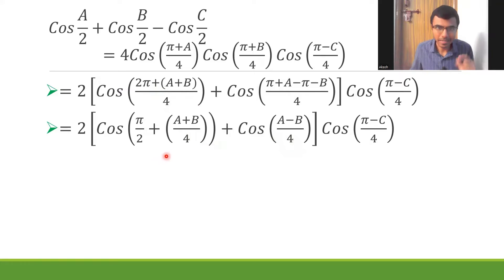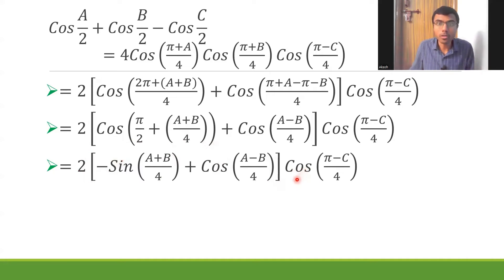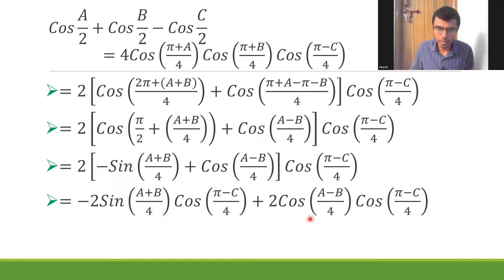Now, cos(π/2 + θ) = −sin θ, so this becomes −sin(a+b)/4 + cos(a-b)/4. Next I multiply this 2 and also cos(π-c/4) to these two terms, ultimately getting: −2·sin(a+b/4)·cos(π-c/4) + 2·cos(a-b/4)·cos(π-c/4).